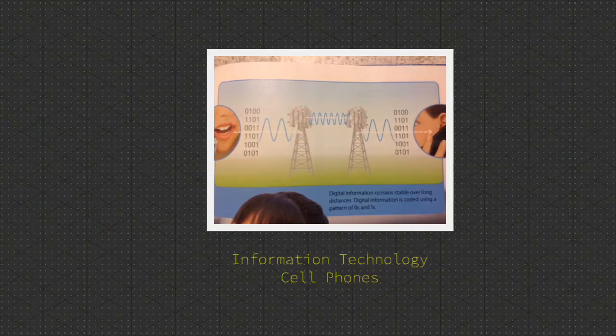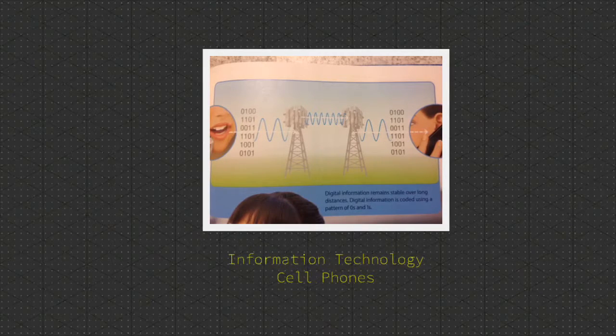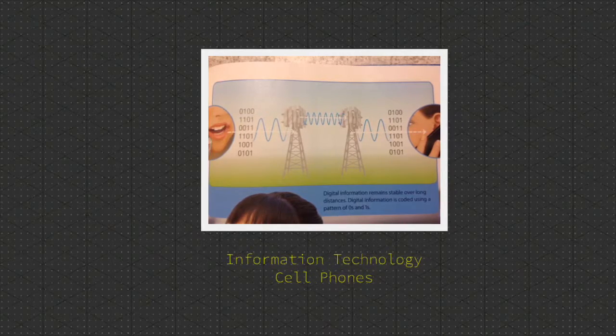Information Technology: Cell Phones. Radio signals, such as the ones used in GPS, can transmit over long distances. But radio signals aren't always stable.